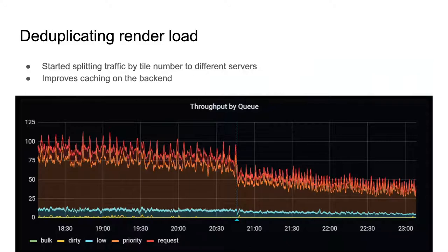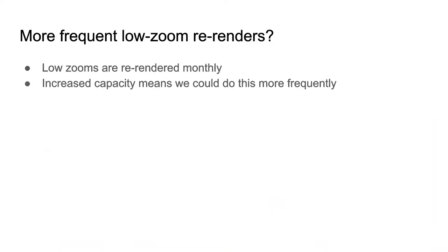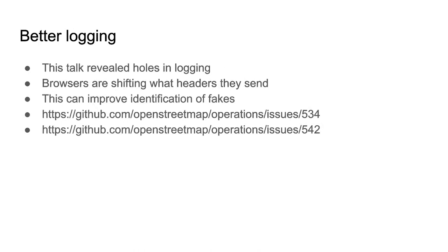A change we made recently is how the CDN picks the backend server. This has improved the load on the servers by segmenting the work between them better. Right now Zooms 0 to 12 are re-rendered once a month. With increased capacity, we can look at changing this to be more frequent, improving the mapper feedback cycle. A lot of this talk was based on log analysis, so it's no surprise I found some holes in what we currently log. Browsers are also changing what headers are being sent, and we need to keep up to date. These changes will improve identification of fakes.